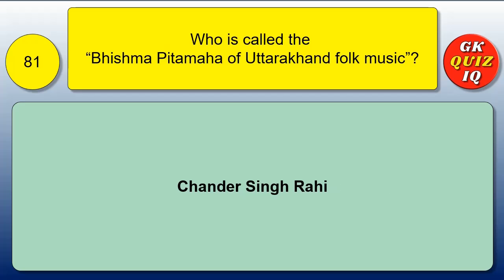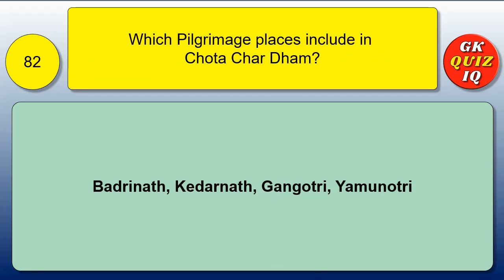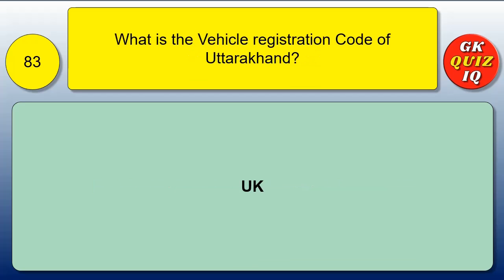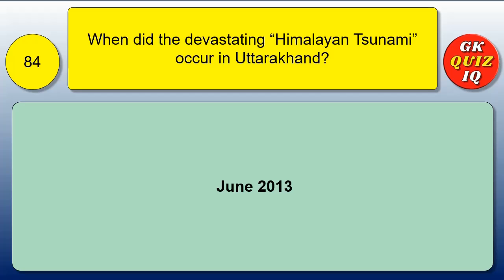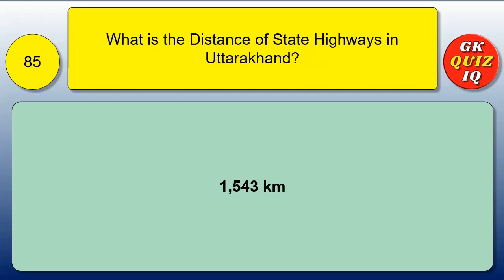Who is called the Bhishma Pitama of Uttarakhand folk music? Chandra Singh Rahi. Which pilgrimage places are included in Chhota Char Dham? Badrinath, Kedarnath, Gangotri, and Yamunotri. What is the vehicle registration code of Uttarakhand? UK. When did the devastating Himalayan tsunami occur in Uttarakhand? June 2013. What is the distance of state highways in Uttarakhand? 1,543 km.